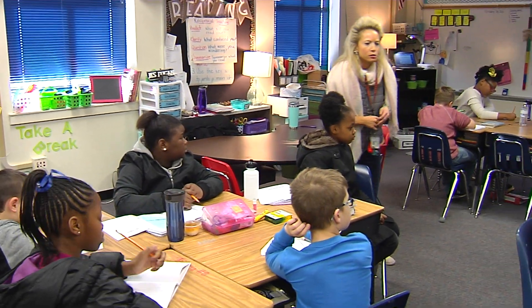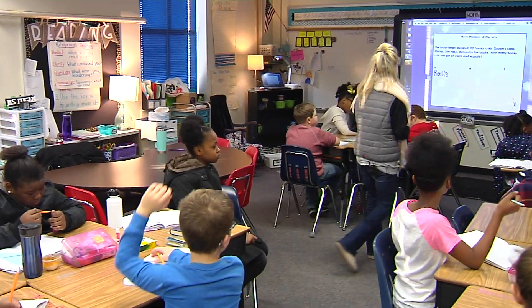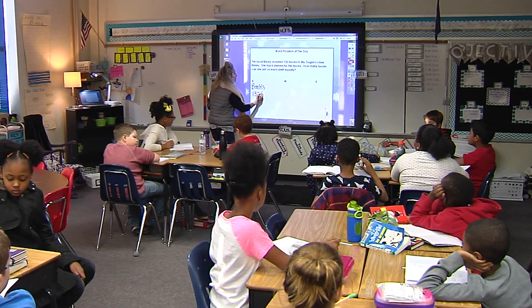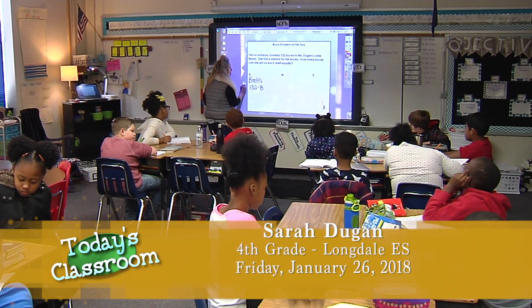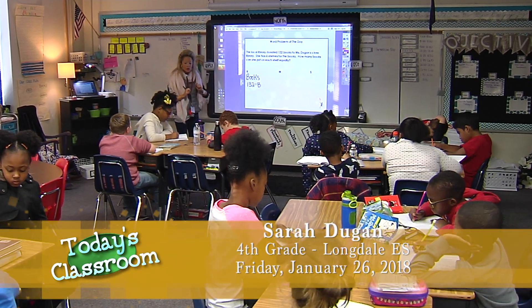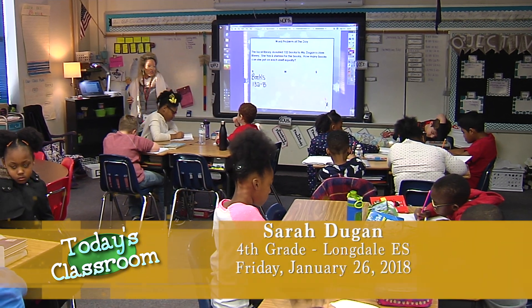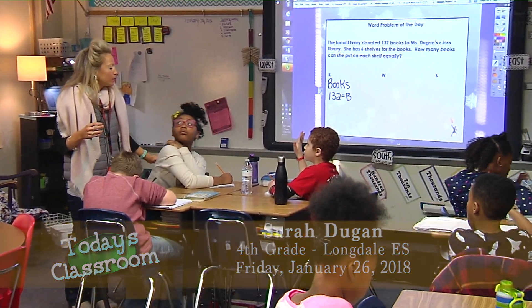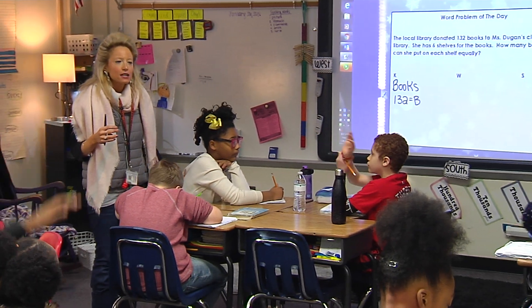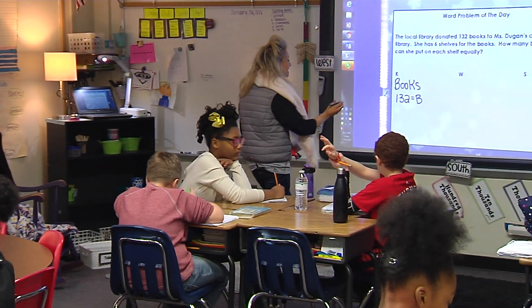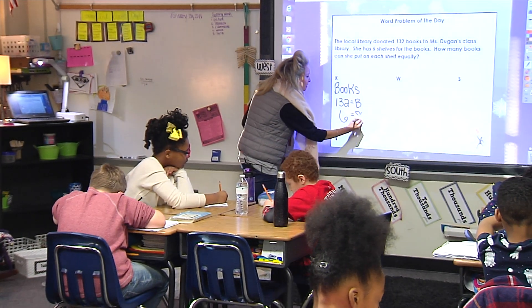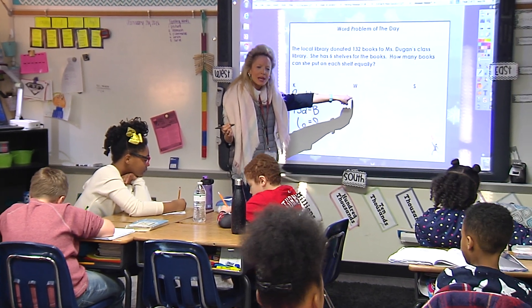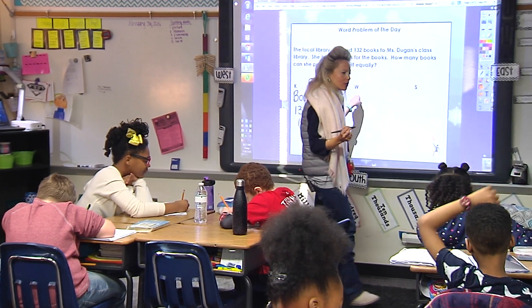Okay, what do I know about my numbers? I'm going to go ahead and write that first. 132 means my books — remember we need to associate that number with an item. And then I have one more number. Isaac — I have six shelves. Do me a favor and under the W, write what I want to figure out. What's my question? Go ahead and write that piece for me.